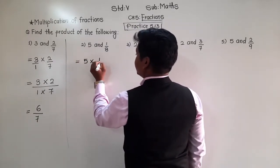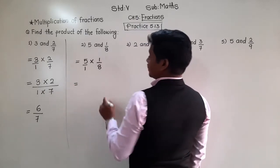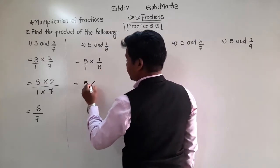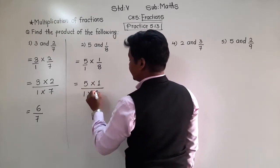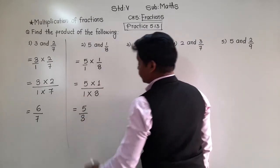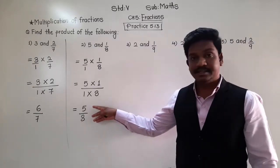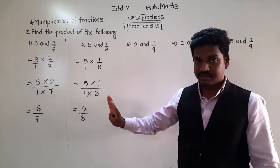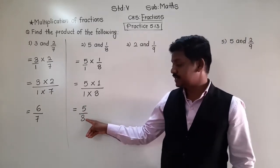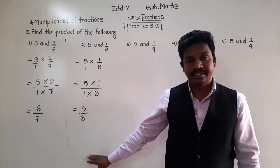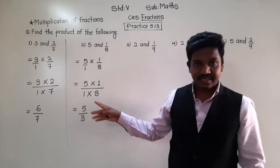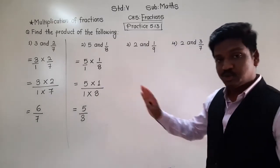Next: 5 multiplied by 1 upon 8. Here, 5 has denominator 1. We multiply numerator with numerator and denominator with denominator: 5 × 1 upon 1 × 8. Five ones are 5, eight ones are 8 — so the answer is 5 upon 8. We can also find the reduced term by dividing both numerator and denominator by the same number. Is it possible here? Are 5 and 8 in any common table? No — so 5 upon 8 is already the smallest term.